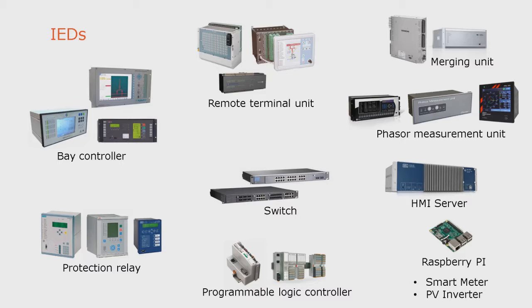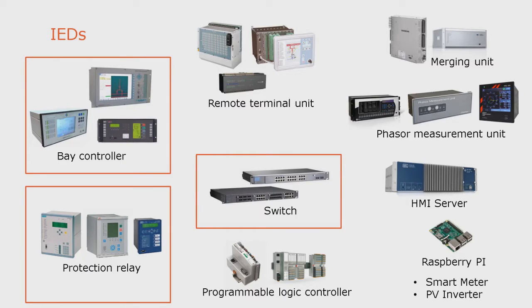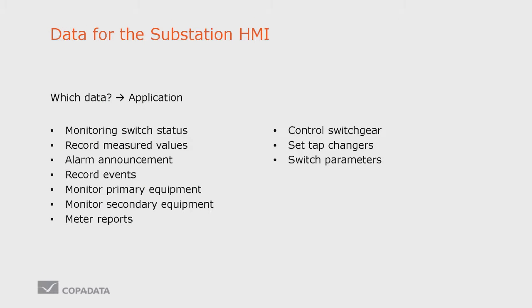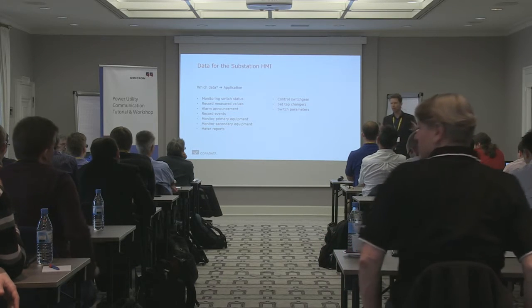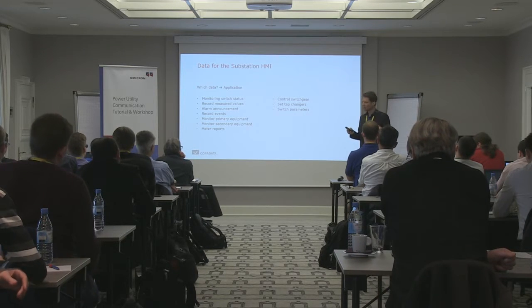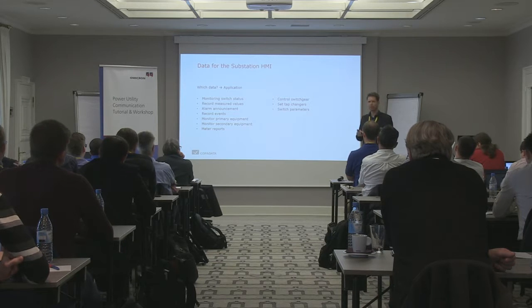But we are talking about HMI, we are talking about station control. What are the most important devices here? It's these. So we are connected to bay controllers, protection units, and we monitor the switches. By the way, monitoring the switches can also be seen in the workshop. So when we talk about the data, we now know the source of the data, the origin of the data for our HMI. But which data is relevant for our HMI? What exactly do we want to see? This depends on the application we want to do with our HMI in the substation.